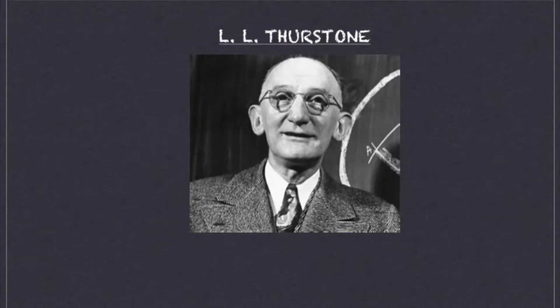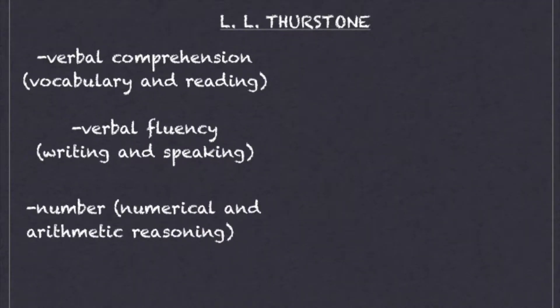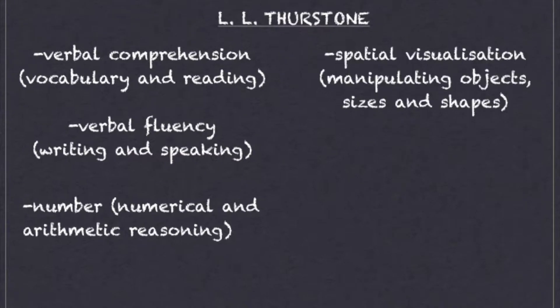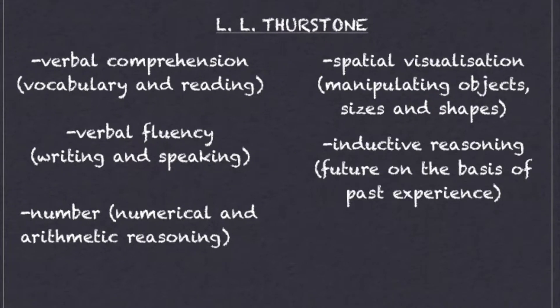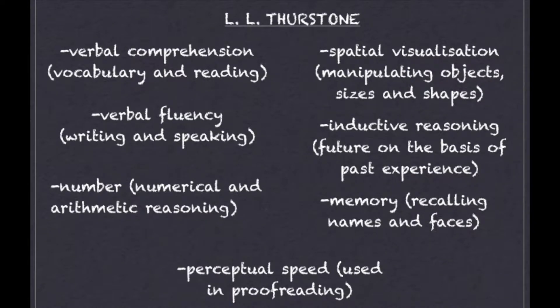His contemporary L.L. Thurstone disagreed strongly, saying there were seven different factors. These were verbal comprehension, verbal fluency, numbers, spatial visualisation, inductive reasoning, memory, and perceptual speed.